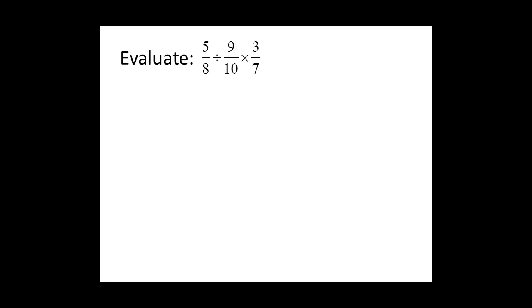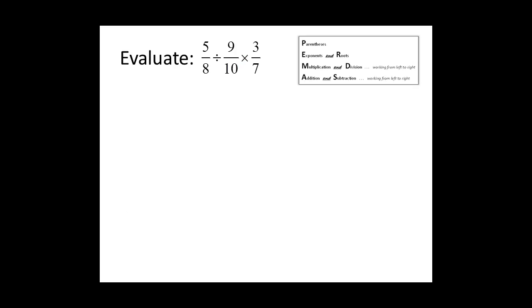Evaluate five-eighths divided by nine-tenths times three-sevenths. Again, we need to follow order of operations: parentheses, then exponents and roots, then multiplication and division, then addition and subtraction. This problem does not have any parentheses or exponents, so we will start with multiplication and division working from left to right. We see we have a division and then a multiplication, so we will work on dividing these fractions first, moving from left to right.